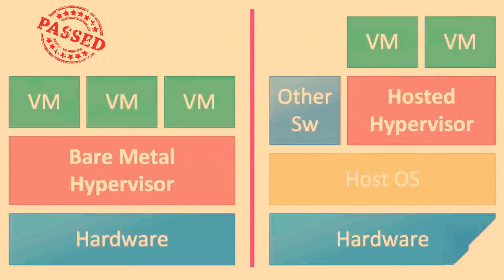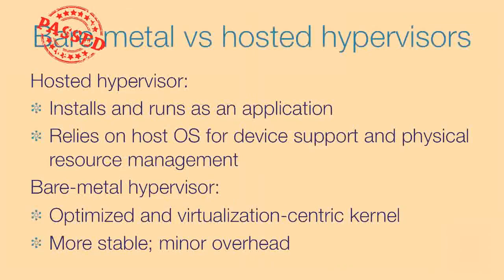There are two different kinds of hypervisors: bare metal and hosted. Bare metal hypervisors run directly on the host's hardware, control available resources, and manage guest operating systems. Bare metal hypervisors are micro-operating systems that enable virtualization on your computers. This model represents the classic implementation of virtual architectures and enterprise infrastructures.